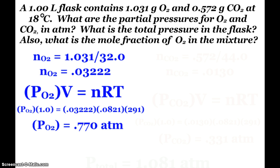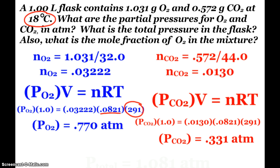Plug and chug away into PV=nRT, and I find that pressure, the partial pressure of oxygen is 0.770 atmospheres. It asks for atmospheres, that's why I used 0.0821. And of course, 291 Kelvin is the 18 degrees Celsius plus 273. I do the same thing for carbon dioxide. I have 0.572 grams divided by its molar mass, 44. Now I know the moles, plug and chug, 0.331 atmospheres. So those are the partial pressures for oxygen and carbon dioxide.